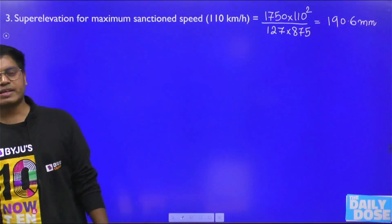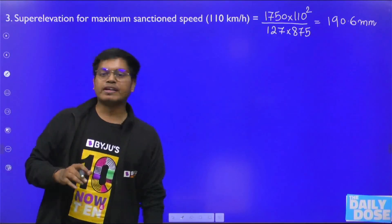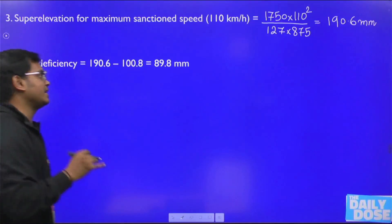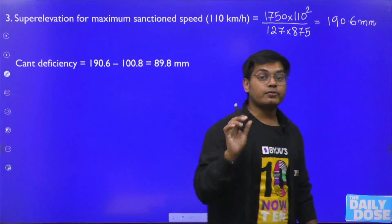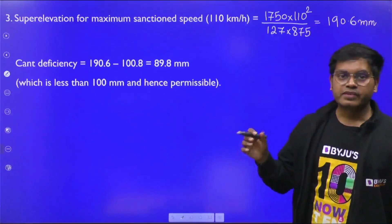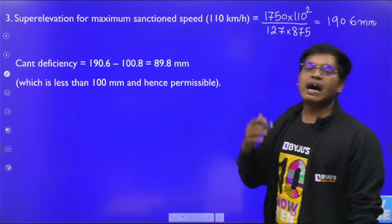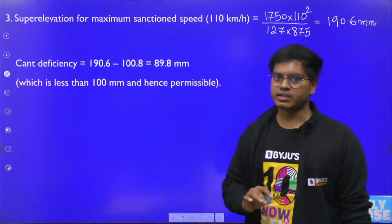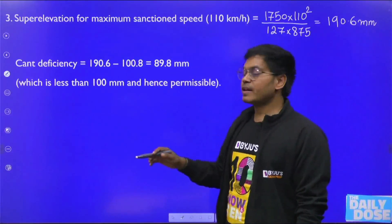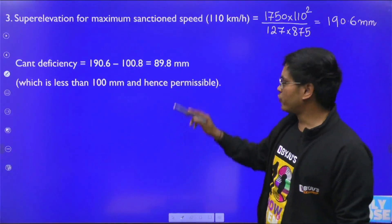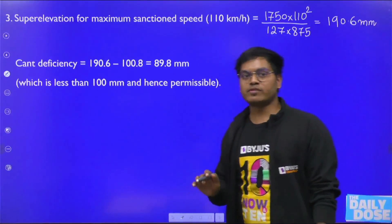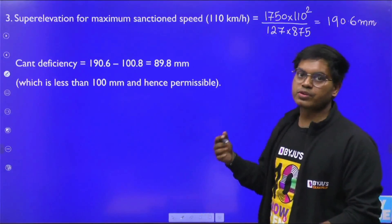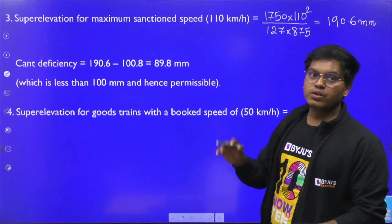With the equilibrium cant (100.8 mm) and the theoretical cant (190.6 mm), we find the cant deficiency: 190.6 − 100.8 = 89.8 mm. Since this is a high speed route, the limit is 100 mm. Since 89.8 mm is under 100 mm, it is permissible.